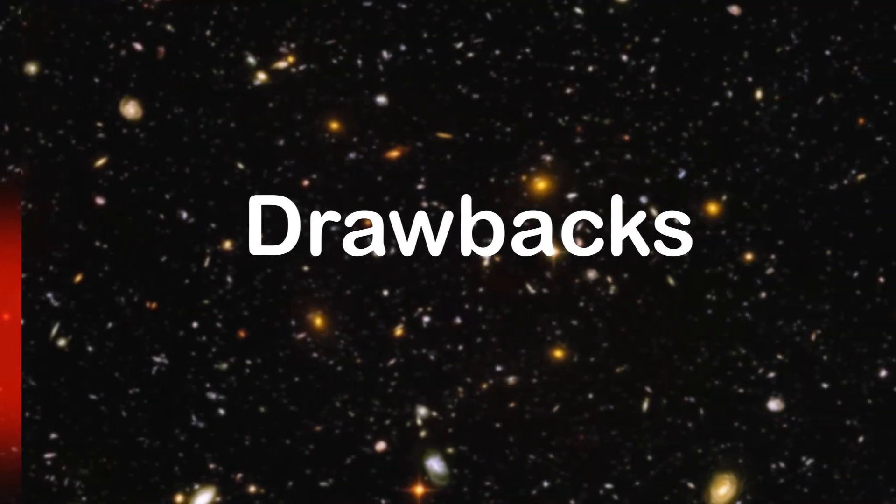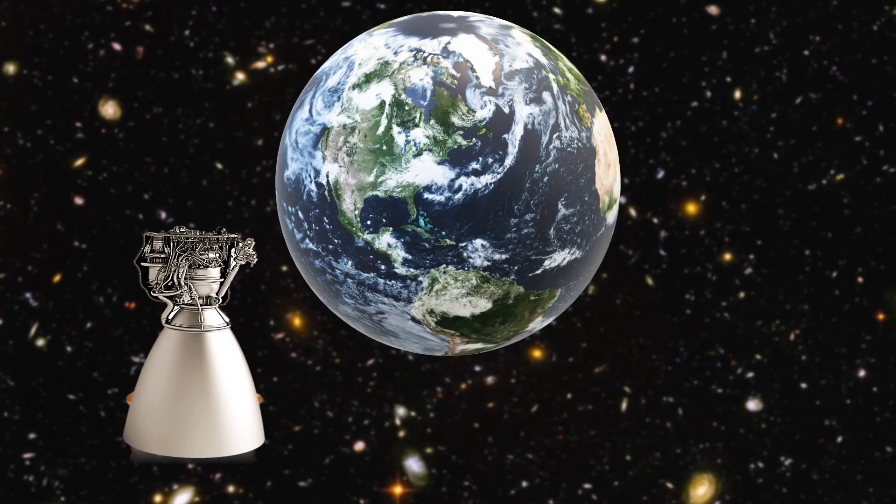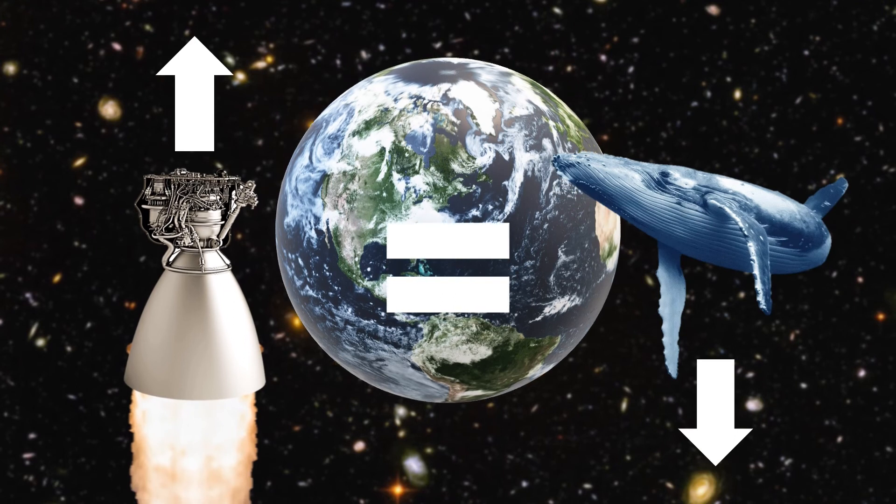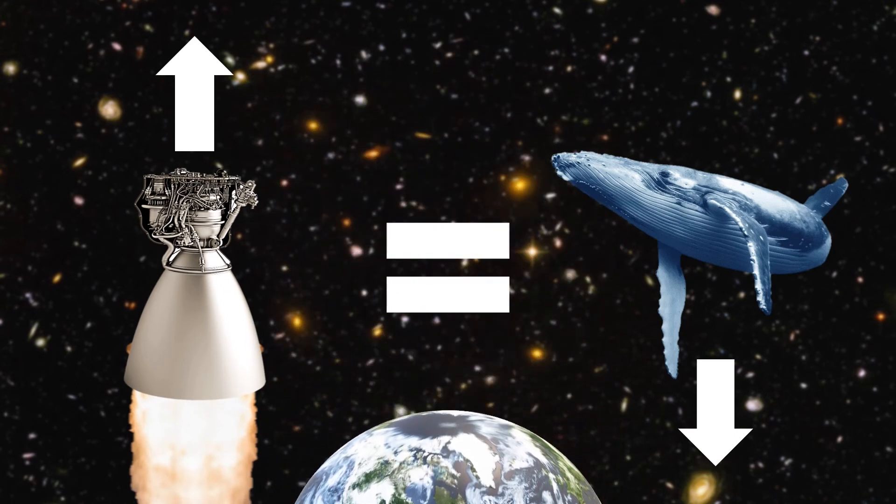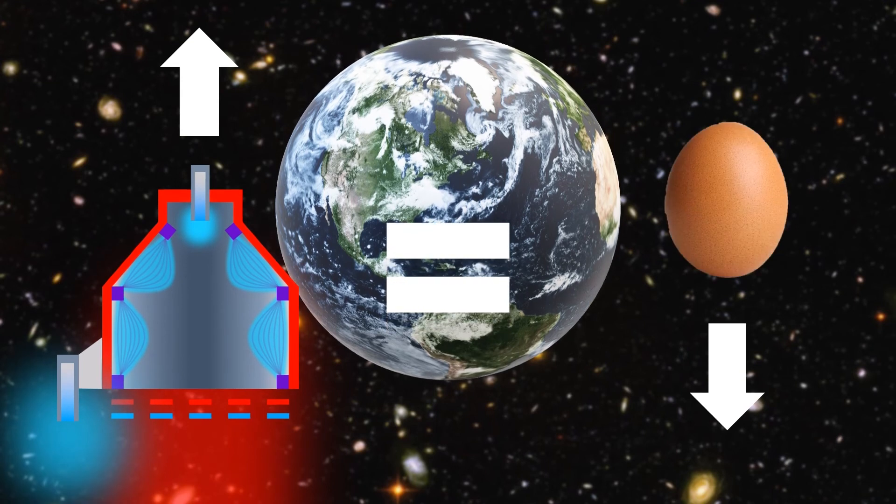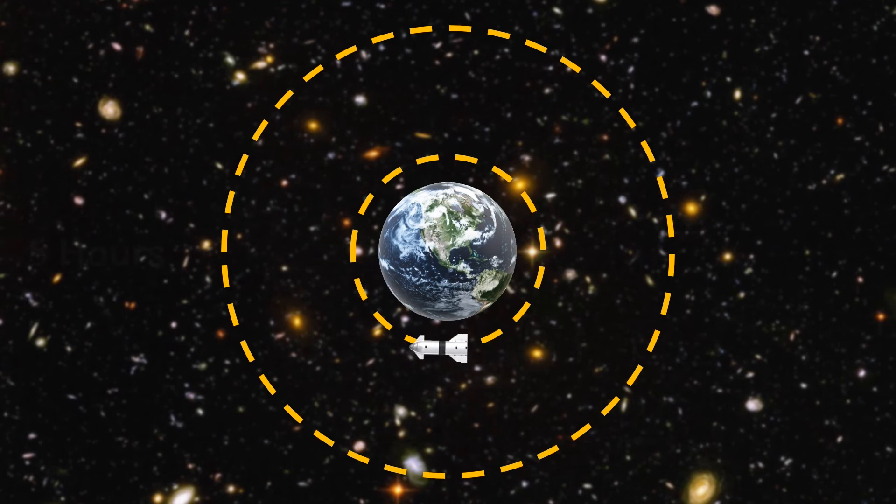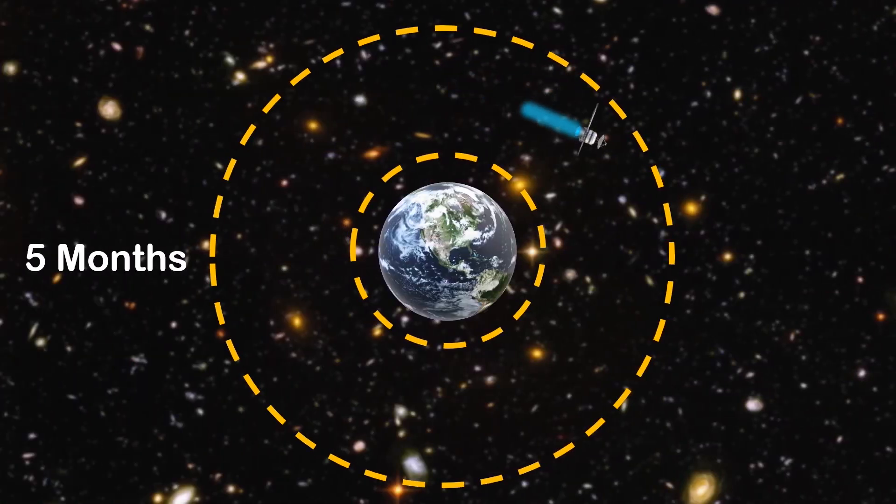There are however two drawbacks to gridded ion thrusters. The biggest is the low thrust. A traditional chemical rocket can produce up to two million newtons of thrust, about the weight of a blue whale. But a gridded ion thruster produces a maximum thrust of 300 millinewtons, about the weight of an egg. This means that a mission that may only take a chemical rocket five hours may take more than five months for a gridded ion thruster, albeit using much less propellant.